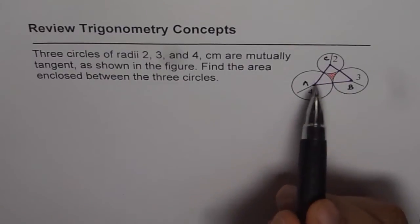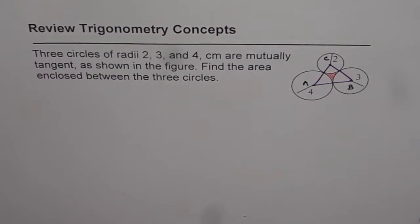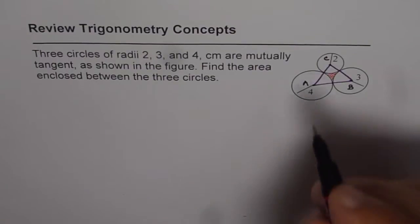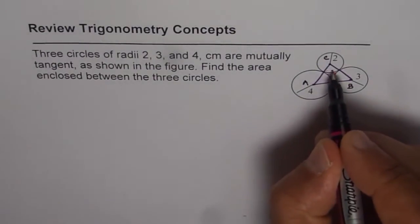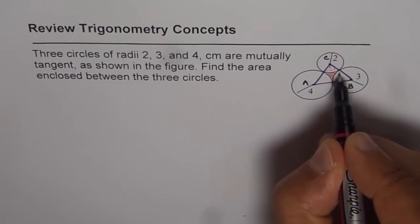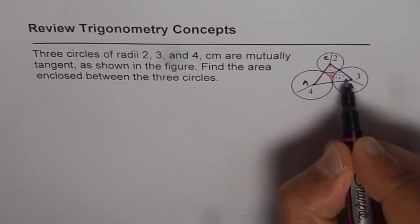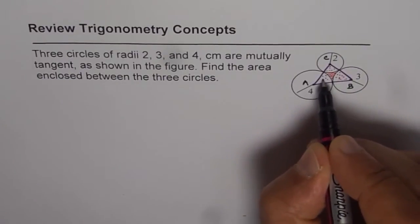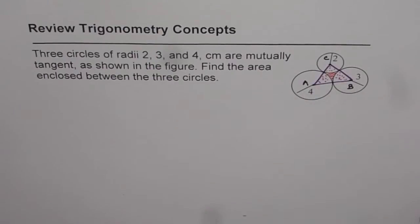Now this triangle can help us to find area of the space enclosed. We can find the area of the triangle and then take away area of the sectors. If we take away area of these sectors from the area of the triangle, we get the enclosed space area. That's how we are going to do it.